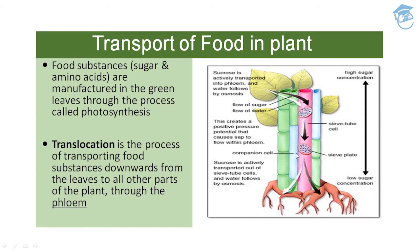The companion cell is in close proximity with the sieve tube element. Sucrose is actively transported out of sieve tube cells and water follows by osmosis. This is the high sugar concentration at the source and the low sugar concentration at the sink. Translocation is the process of transporting food substances downward from the leaf to all other parts of a plant through the phloem.